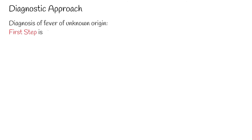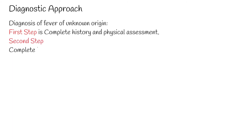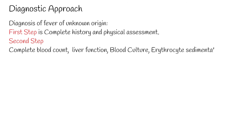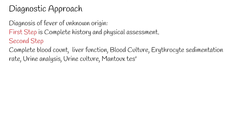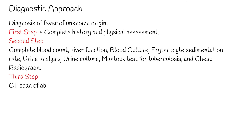Regarding the diagnosis of fever of unknown origin: the first step is a complete history and physical assessment. If we can define a cause, we can follow our findings. If we cannot identify a cause, then we perform tests: complete blood count, liver function, blood culture, erythrocyte sedimentation rate, urine analysis, urine culture, Mantoux test for tuberculosis, and chest radiograph.